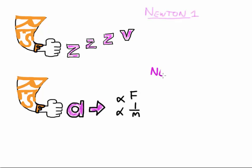Newton's 2nd Law says that when a resultant force acts upon an object — again shown by the fist — that object, now indicated by the letter A, will accelerate in the direction of the force. The second part: acceleration is directly proportional to the force and inversely proportional to the mass, shown as directly proportional to F and to 1 over M.